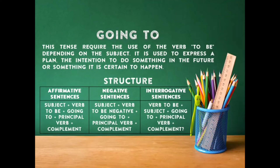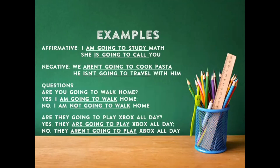Con la negativa, es de la misma manera, solo que lo que vamos a negar va a ser el verbo to be — sería isn't, aren't, y I am not. En las oraciones interrogativas: el verbo to be al inicio, el sujeto, el going to, el verbo principal en presente, complemento y el signo de interrogación. Examples, affirmative: I am going to study math. She is going to call you. Yo voy a estudiar matemática. Ella va a llamarte.